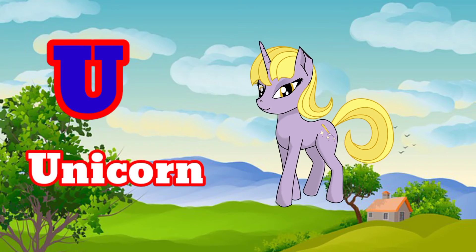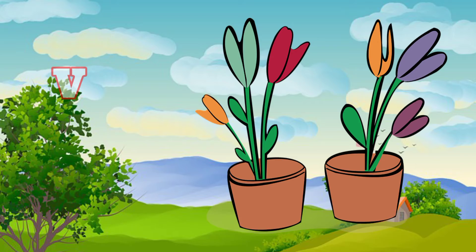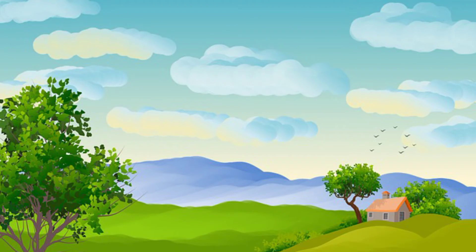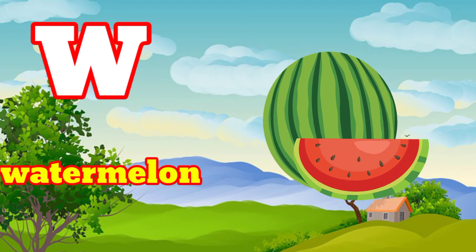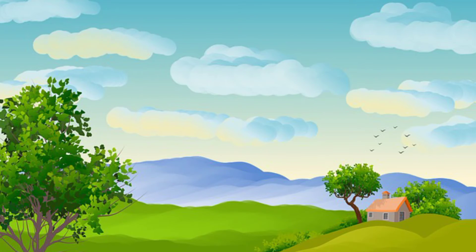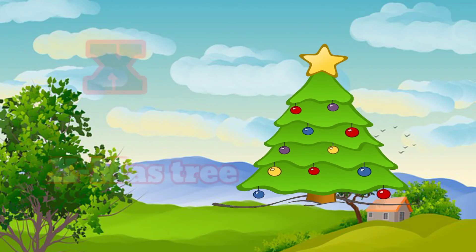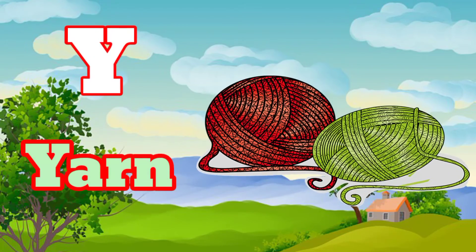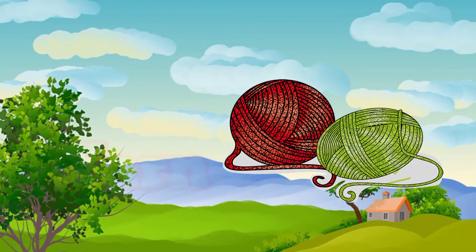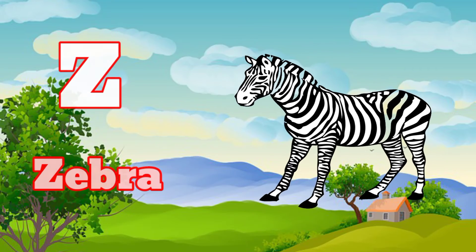U for unicorn, V for vase, W for watermelon, X for xmas tree, Y for yarn, Z for zebra.